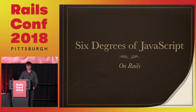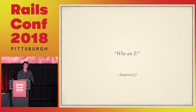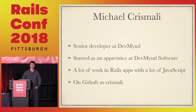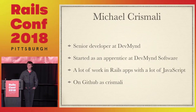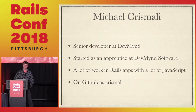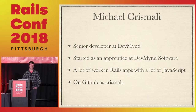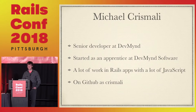Let's get started. Who am I? My name is Michael Krismali. I work at a company called DevMind Software. I started out there as an apprentice after finishing a code bootcamp at the Starter League out in Chicago. I'm currently a senior developer there. Lots of good times with lots of good people. You can find me on GitHub — it's just my last name, Krismali. I don't tweet or go on Twitter, so I didn't put that up.